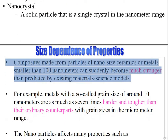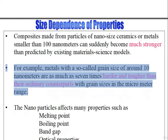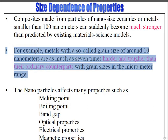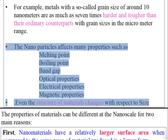Composites made from particles of nanosize ceramics or metals smaller than 100 nanometers can suddenly become much stronger than predicted by existing materials science models. For example, metals with a so-called grain size of around 10 nanometers are as much as 7 times harder and tougher than their ordinary counterparts with grain sizes in the micrometer range. Nanoparticles affect many properties such as melting point, boiling point, band gap, optical properties, electrical properties, and magnetic properties. Even the structure of materials changes with respect to size.